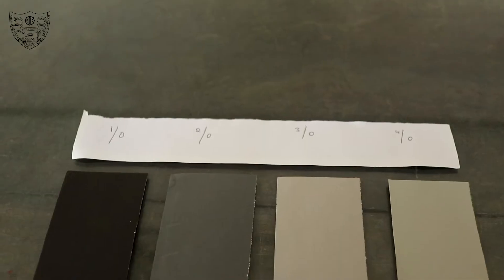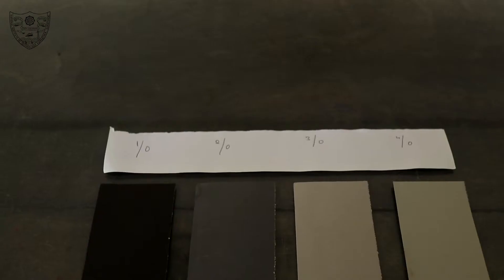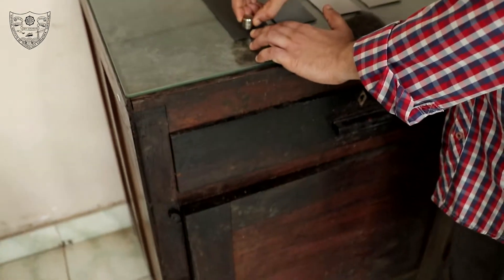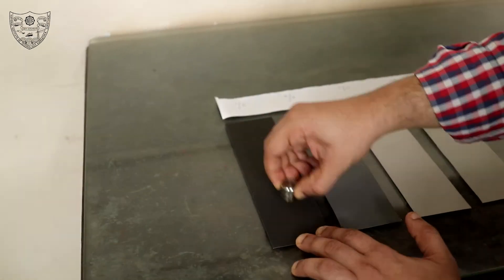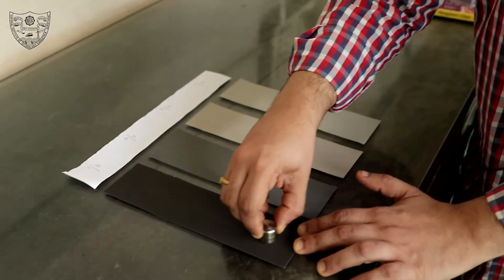After belt grinder, the next step is to polish using emery paper of different grades. We take the 1 bar 0 paper, place on a glass plate supported on a wooden framework, polish the sample in one direction.